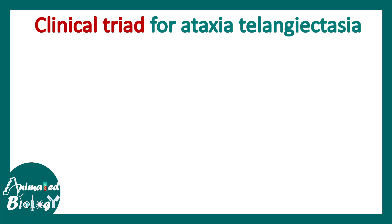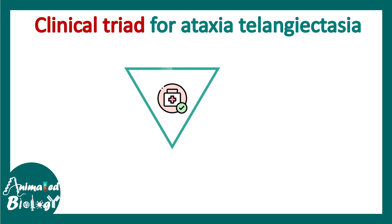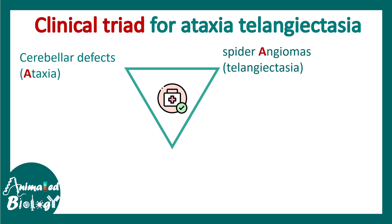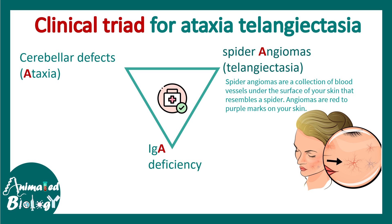Let's talk about the clinical triad of Ataxia Telangiectasia. The clinical triad includes three things: cerebellar defects, which is Ataxia; spider angiomas, which is Telangiectasia; and IgA deficiency. So these are the three important symptoms.